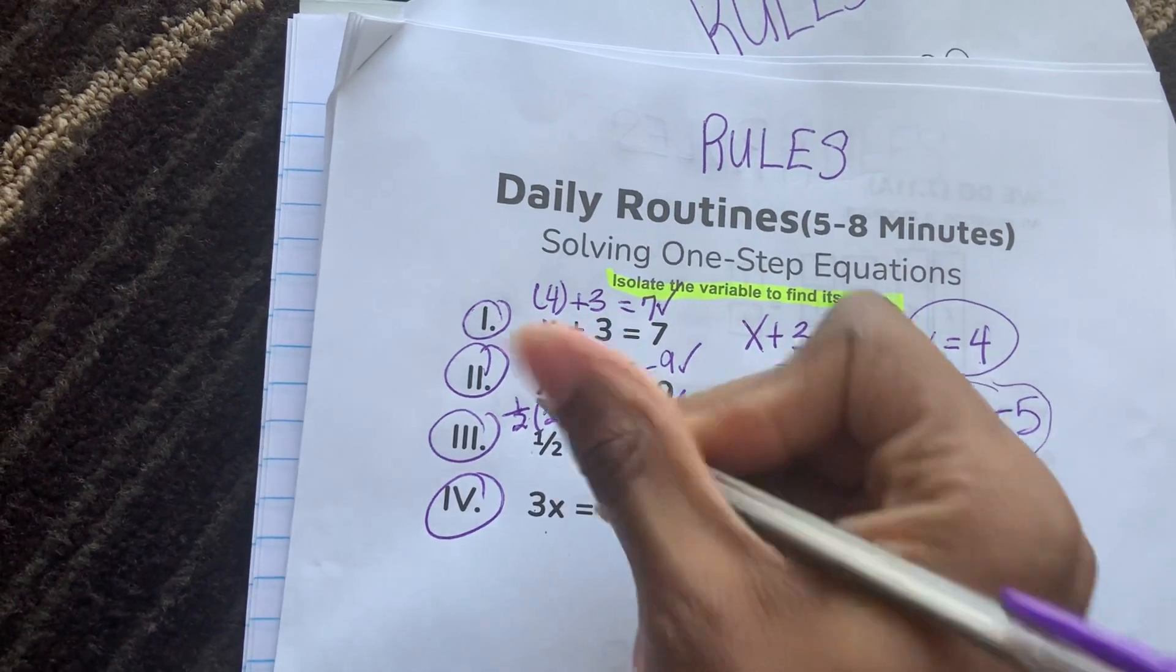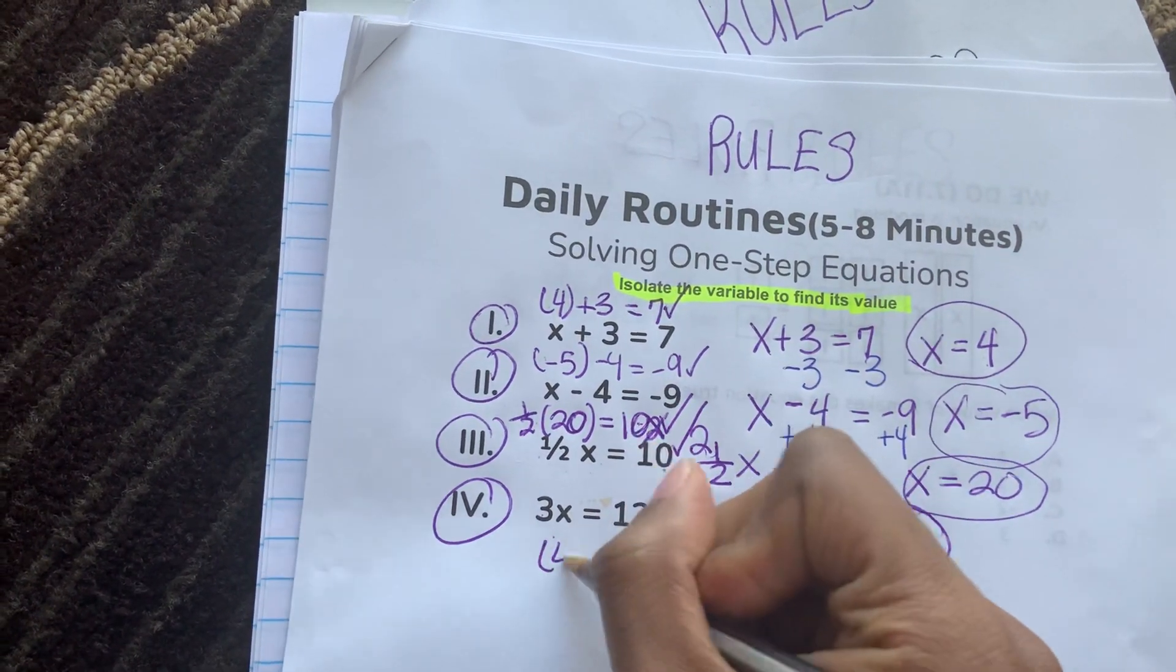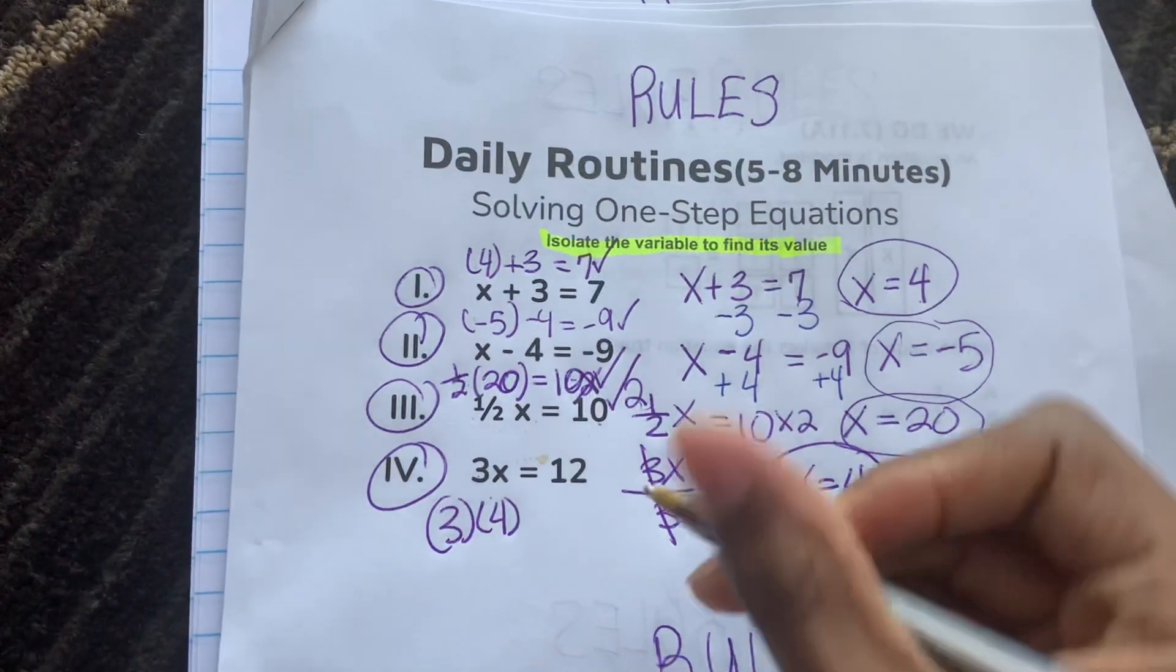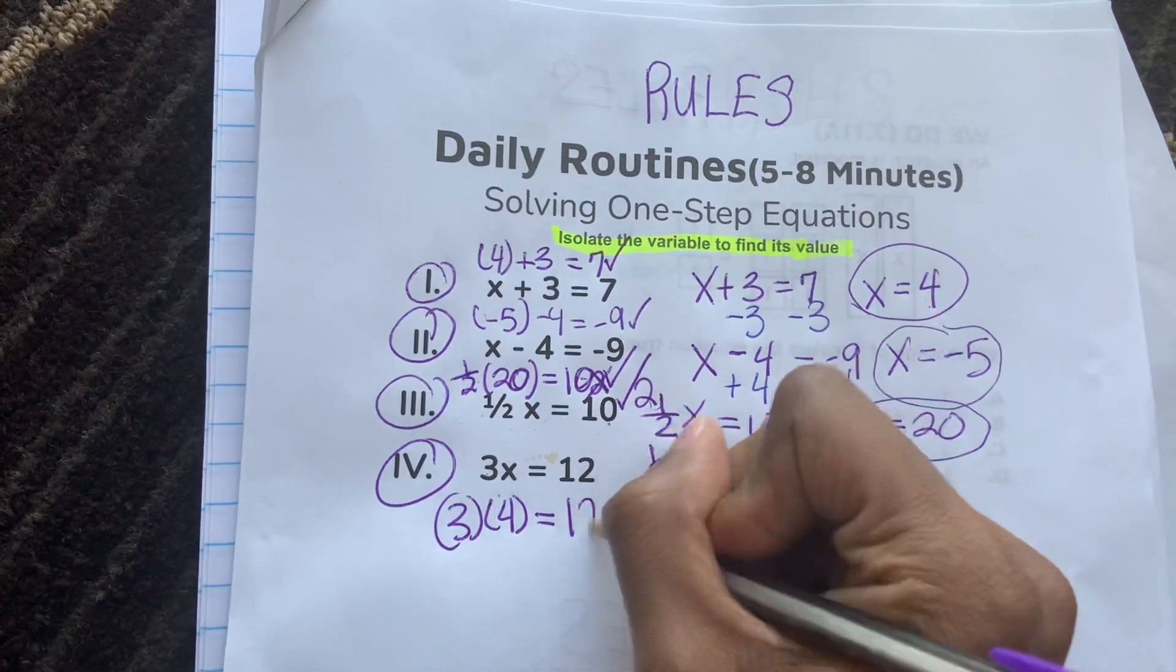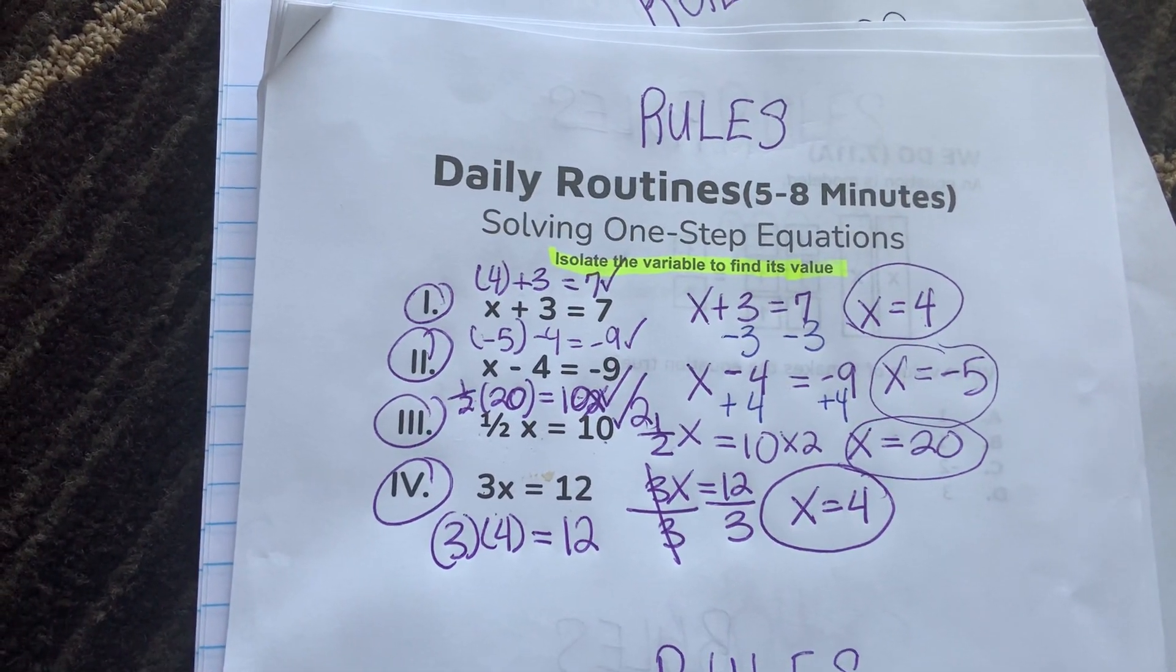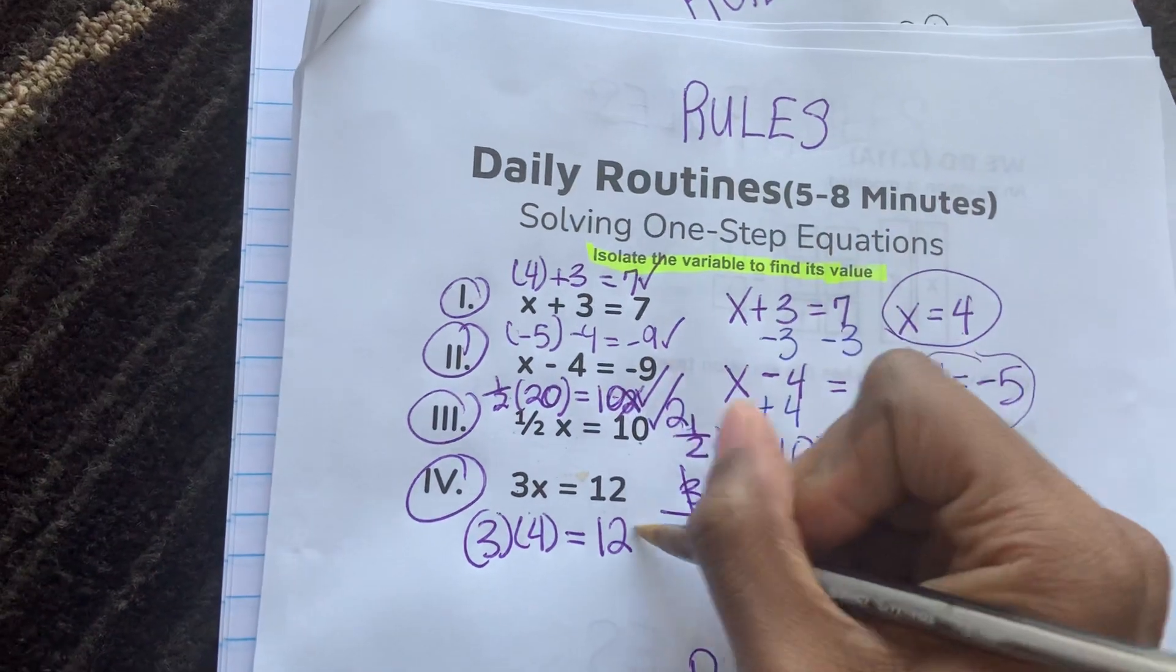Now let's double check. If x is indeed 4, 3 multiplied by 4 is equal to 12. 3 multiplied by 4 is equal to 12. All right, and that proves true.